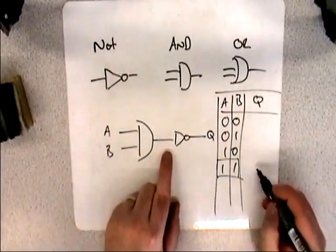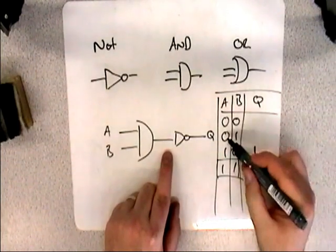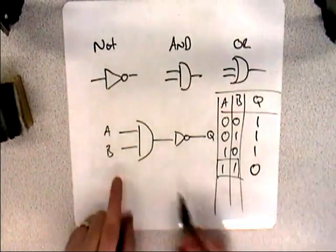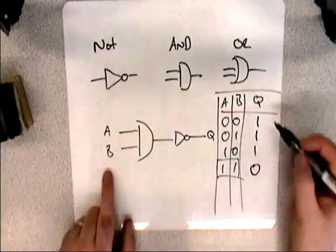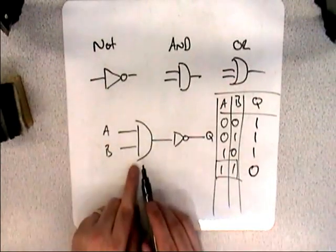We then go through a NOT gate that flips it round. So instead of being a 1, this becomes a 0. Instead of being a 0, this becomes a 1. Instead of a 0, this becomes a 1. Instead of a 0, this becomes a 1. And so this is the truth table for this diagram, this set of logic gates with an AND and a NOT.